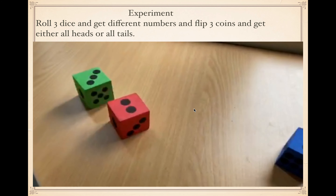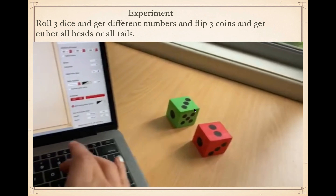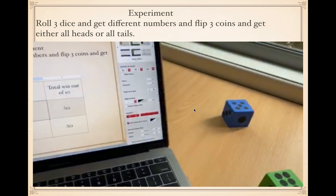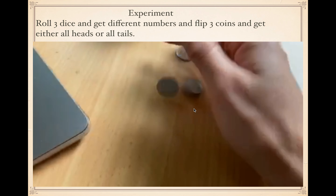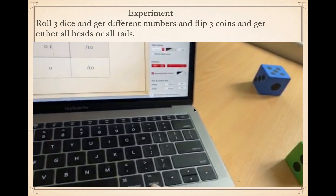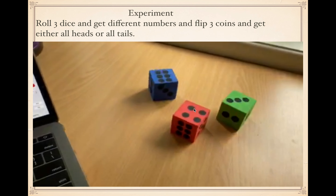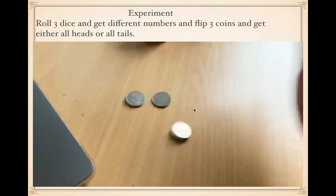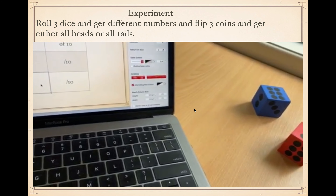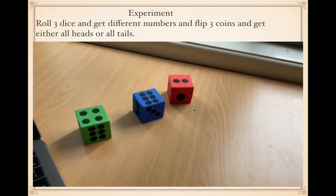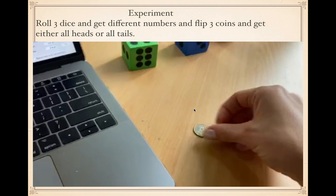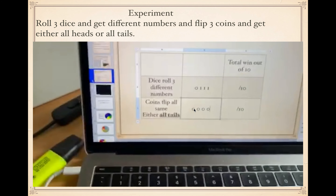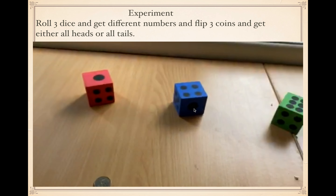Zero for coins — and also zero for dice because we rolled two twos and one three. Next round: one for dice and zero for coins. Next: one for dice and zero for coins. Next: one for dice. Coins — zero. You can see this is going as predicted.